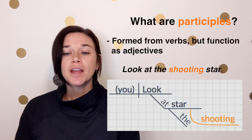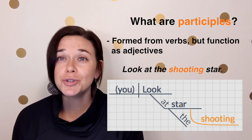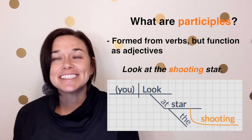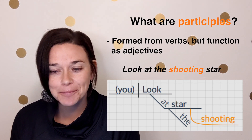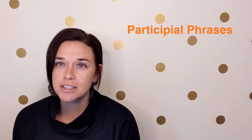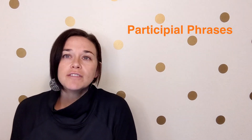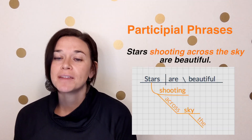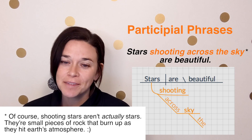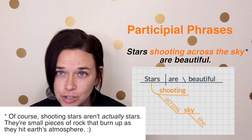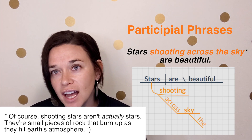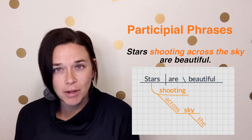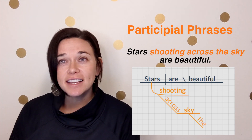Let's look at one more example of a participle. Look at the shooting star. Shooting is a participle. It's formed from the verb shoot, and it's not acting as a verb — it's acting as an adjective, modifying the noun star. Often when we use participles, we add extra words to them, and when we do this, all of the words function together as something called a participial phrase. Stars shooting across the sky are beautiful. Notice we still have that participle shooting, but now we have some more words with it: across the sky. All of those words together — shooting across the sky — are coming together to function as an adjective. We call it a participial phrase, modifying the noun stars.